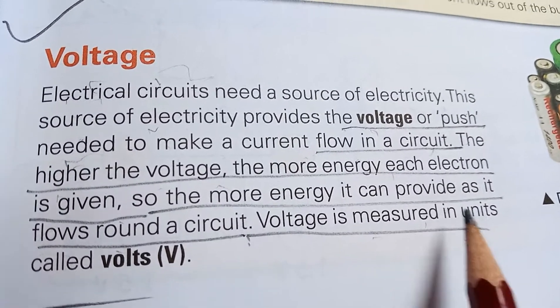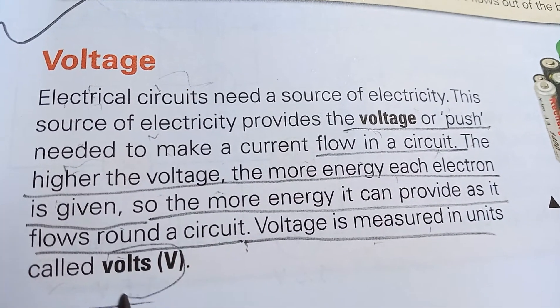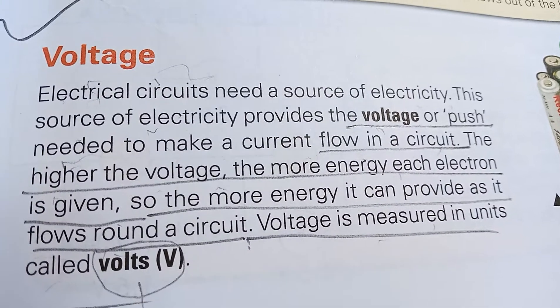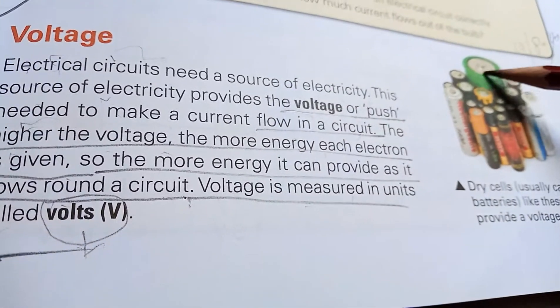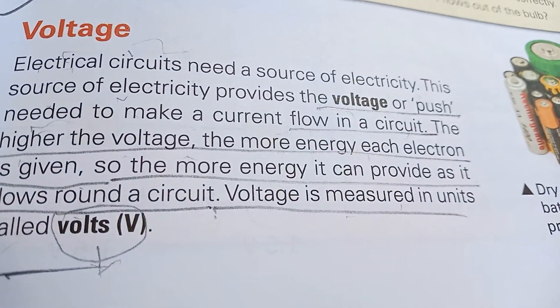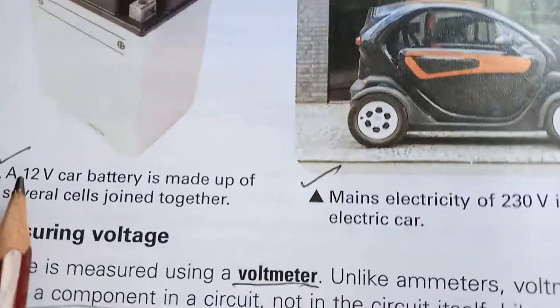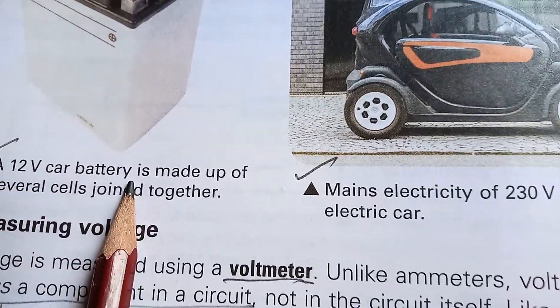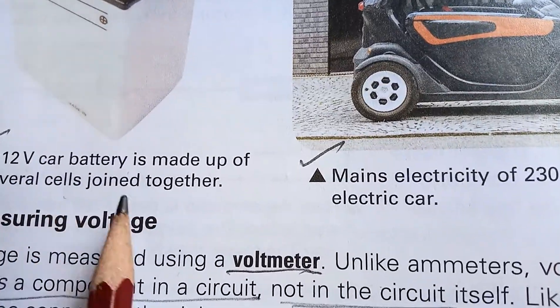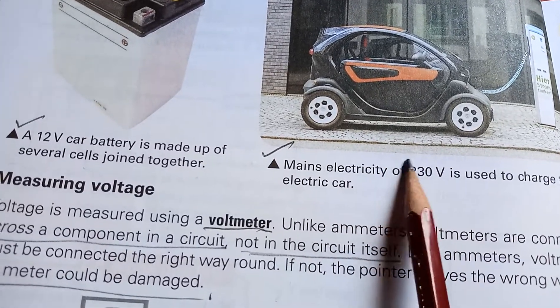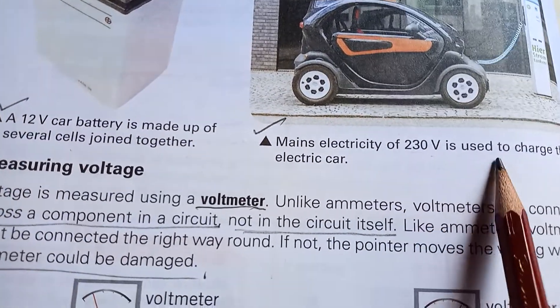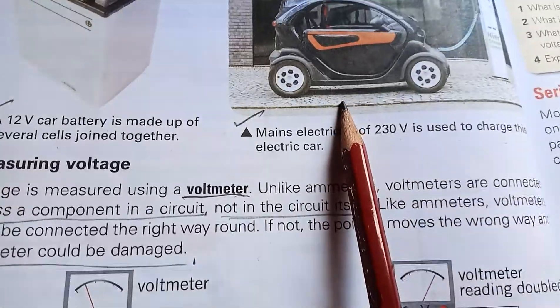Voltage is measured in units called volts. The higher the voltage, the brighter the object is. You can see a 12 volt coil battery is made up of several cells joined together, and main electricity of 230 volts is used to charge this electric car.